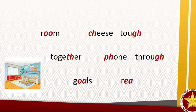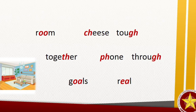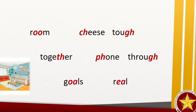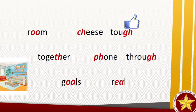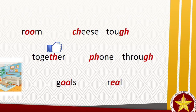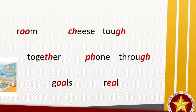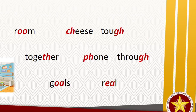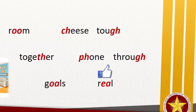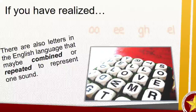Now, look at how the consonants were treated in the following words. In the word 'room,' how many times did letter O appear? What is the sound of the two letter O's in the word 'room'? What about in the word 'cheese'? Which letters represent the sounds of C and H in 'cheese'? What about in the word 'tough'? What is the sound of letters G and H in 'tough' when combined? In 'together,' what is the sound of the combined letters T and H? What about the letters P and H in the word 'phone'? When pronouncing 'through,' can you still hear the sounds of G and H separately? There are letters in English that may be combined or repeated to represent one sound.